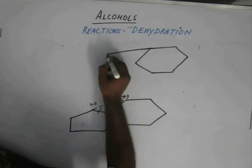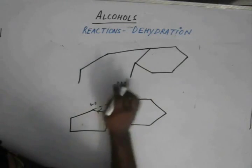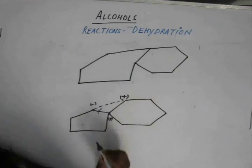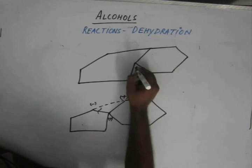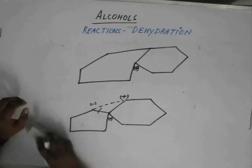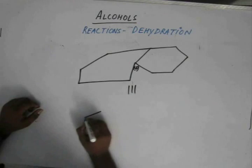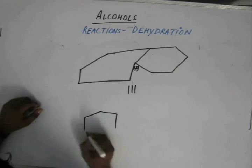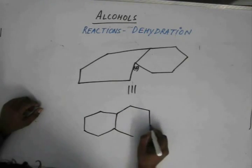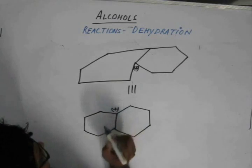This bond, and the plus charge is over here. If we draw this properly, we get a six-membered carbon and another six-membered carbon over here with a plus charge adding over here.